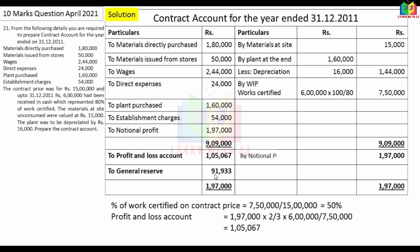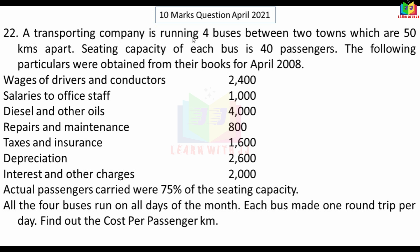Next problem: a transport company runs 4 buses between 2 towns that are 50 km apart. The seating capacity of each bus is 40 passengers. The following particulars were obtained for April 2008: wages of drivers and conductors Rs.2,400; salary to office staff Rs.1,000; diesel and other oil Rs.4,000; repair and maintenance Rs.800; tax and insurance Rs.1,600; depreciation Rs.2,600; interest and other charges Rs.2,000.